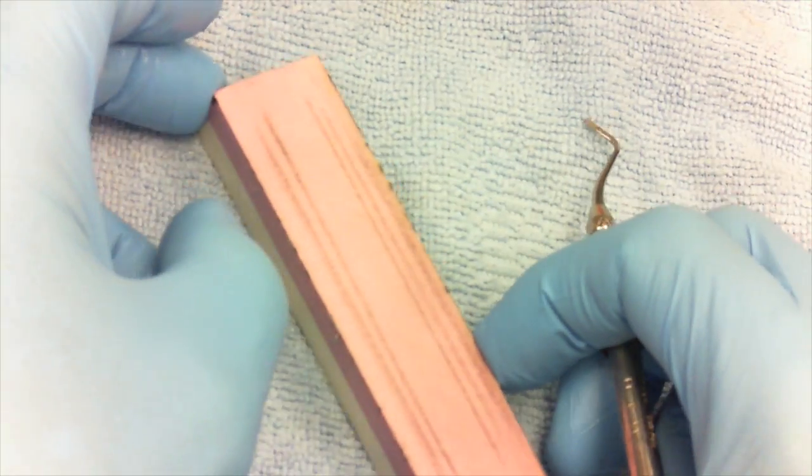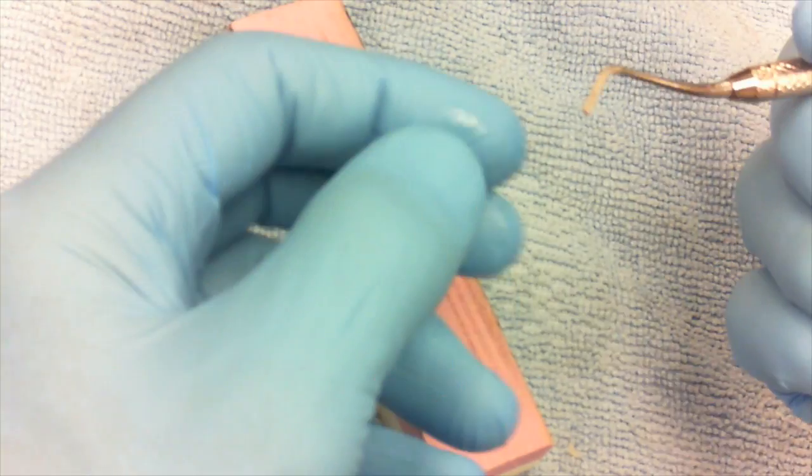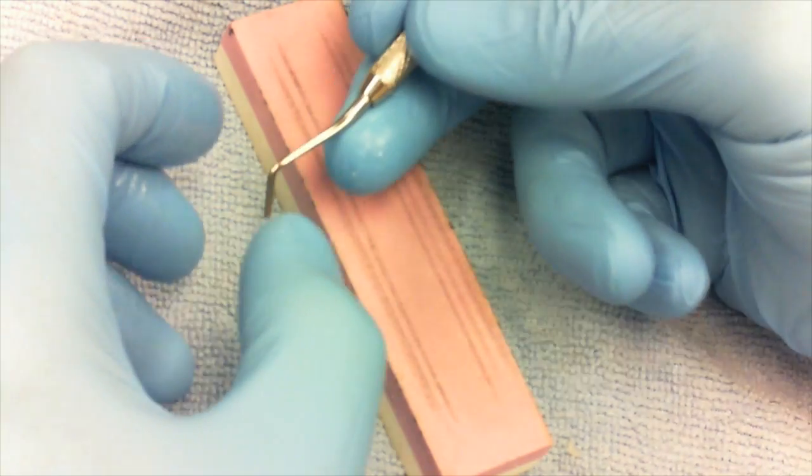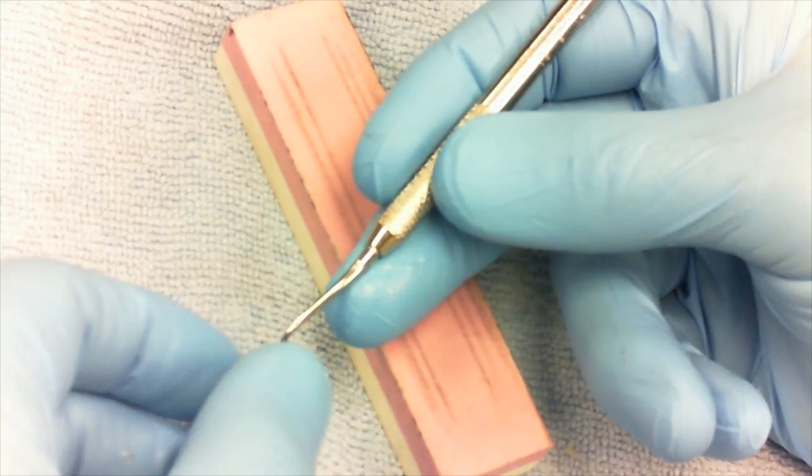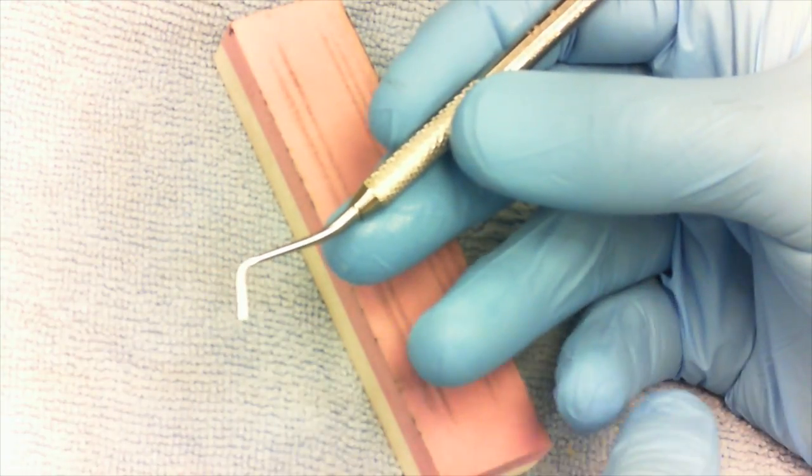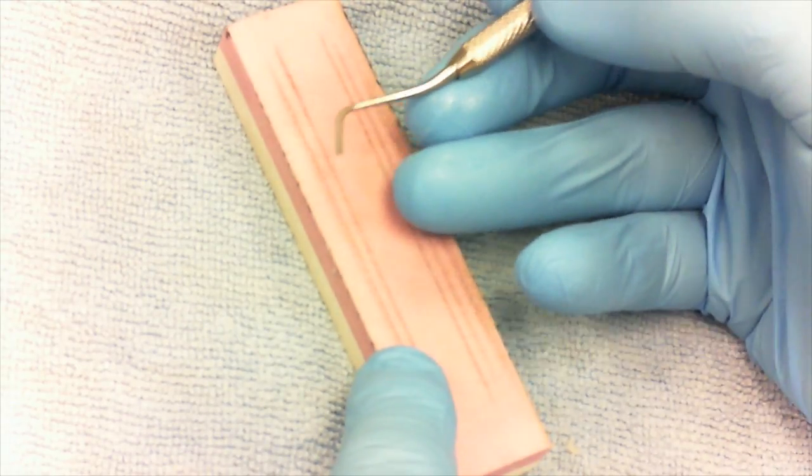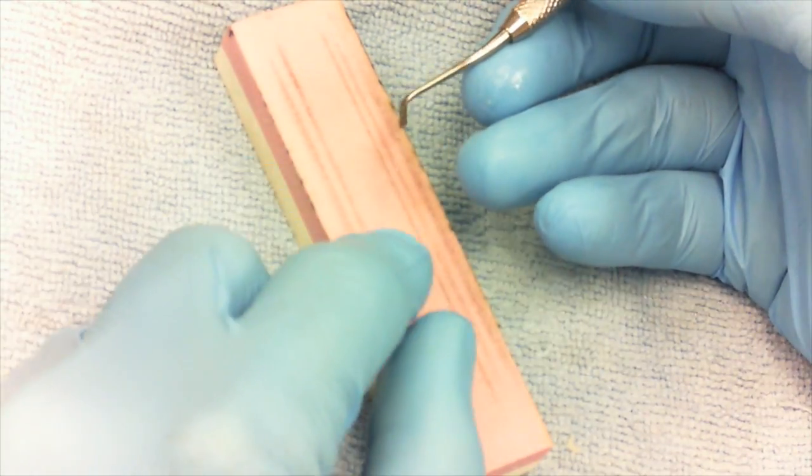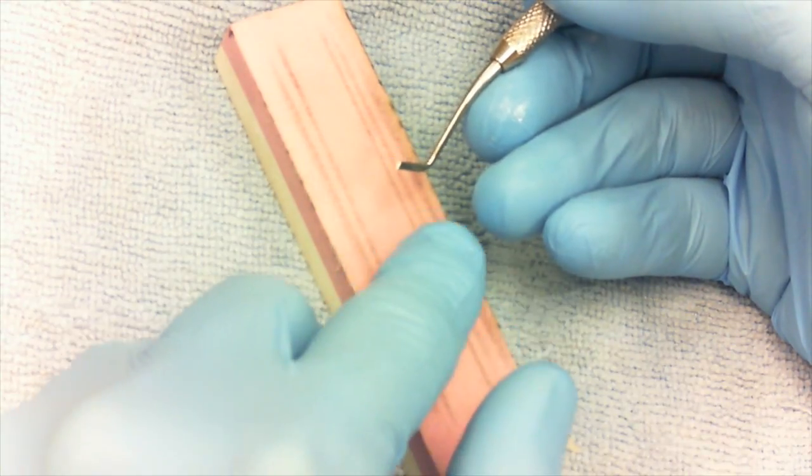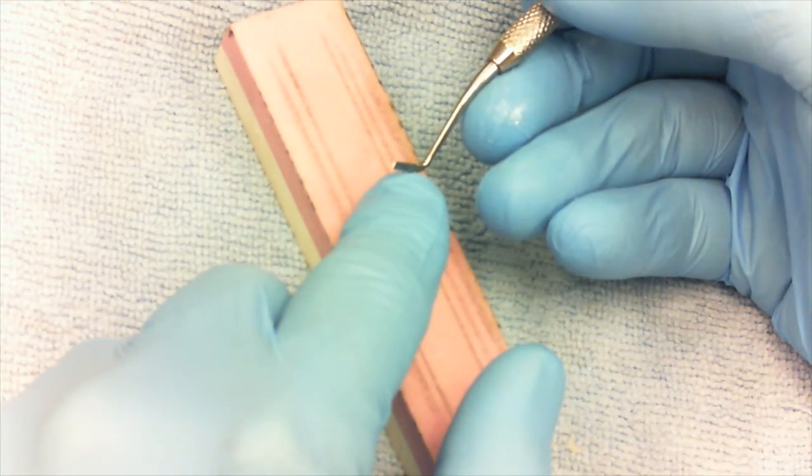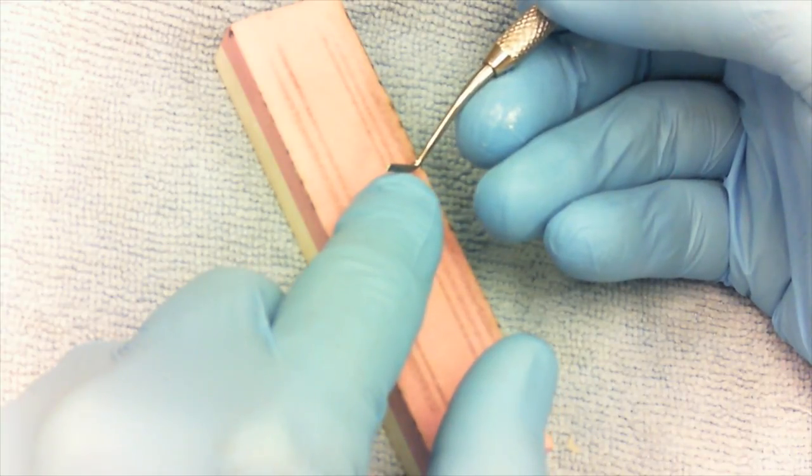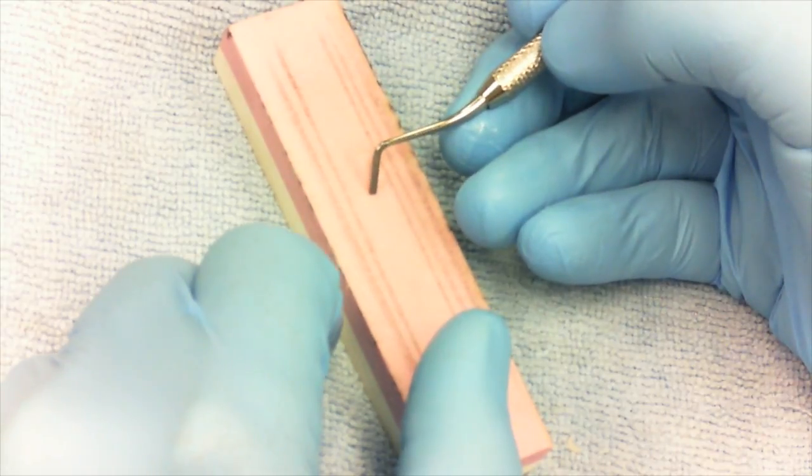Here's the goal when it comes to sharpening instruments. You want to always hold the instrument with a modified pen grasp. I'm going to use my ring finger and pinky to stabilize against the side of the sharpening stone. I want to also identify the bevel. The bevel is easy to see because it reflects light back and looks like a little parallelogram. That's going to be up against the stone.